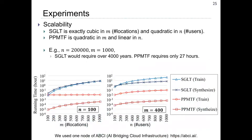Next, we evaluate the scalability. SGLT is exactly cubic in M, the number of locations, and quadratic in N, the number of users. In contrast, PPMTF is quadratic in M and linear in N. So for example, when N is 200,000 and M is 1,000, SGLT would require over 4,000 years, whereas PPMTF requires only 2 days.